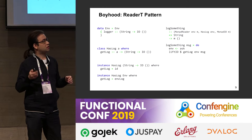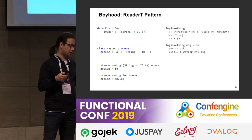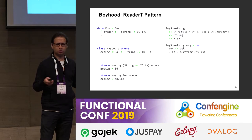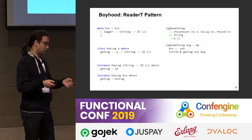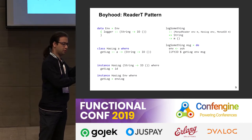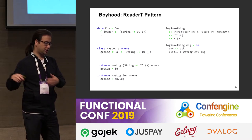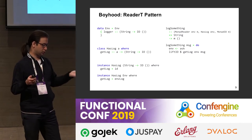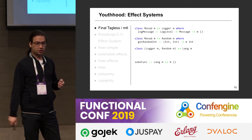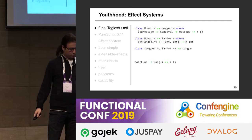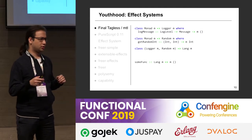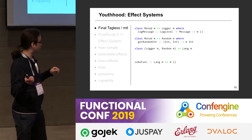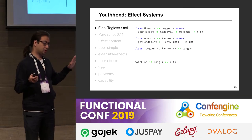Haskellers started thinking about how to specify effects in some other way — to control them better, describe them better, and clearly understand where we have such effects and where these two worlds should not interact. This is how the story with effect systems started. We ended up in a situation where we have ten or more libraries for effect systems in Haskell. Before considering some of them, let's talk about final tagless and MTL style.